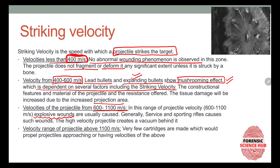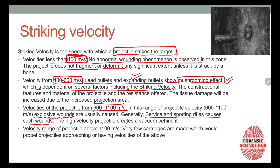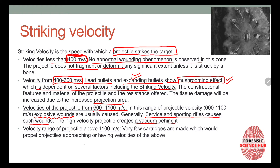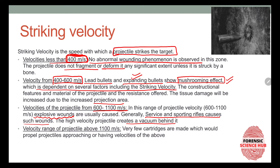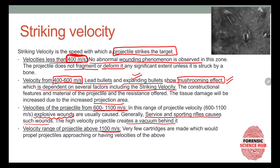In the 600 to 1100 meters per second range, we get to see explosive wounds. Generally, service and sporting rifles cause such wounds. High-velocity projectiles create a vacuum behind them, and when the bullet enters the target, that vacuum also gets drawn inside, leading to even more damaging effects on the wound.